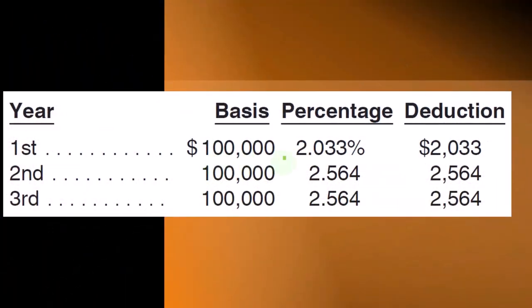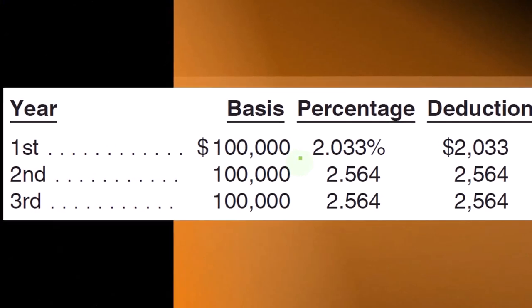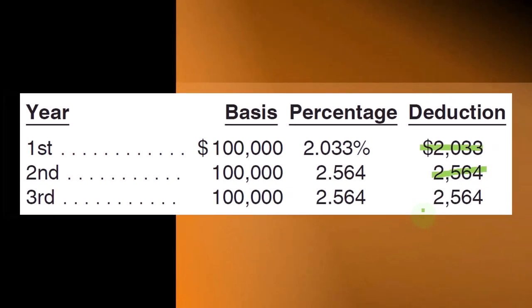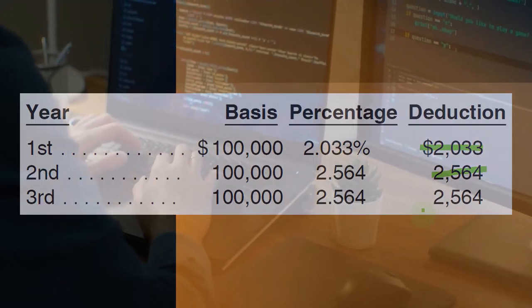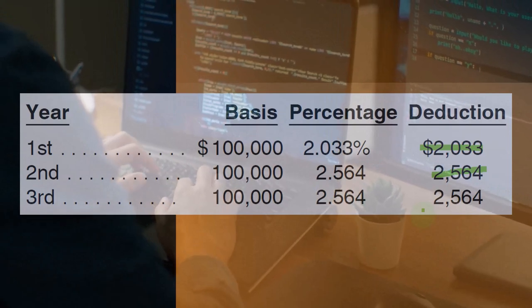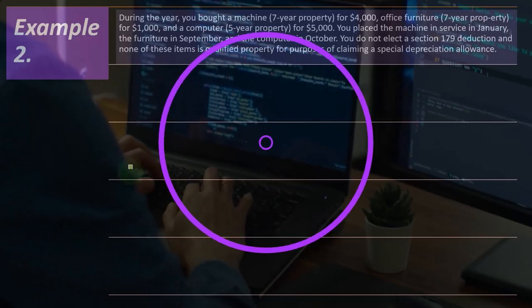For the first three years, you just multiply by the amounts found in the table. This is quite useful for projecting out into the future. I would plug it into the software and double-check that the first number is accurate, confirm I'm looking at the right table, and then use the tables to help project further into the future.